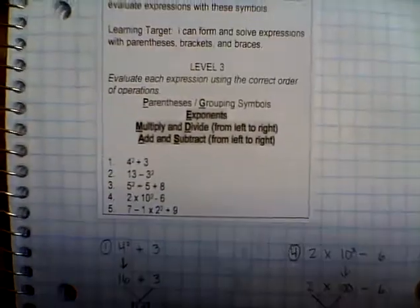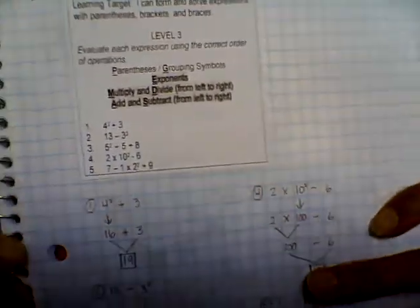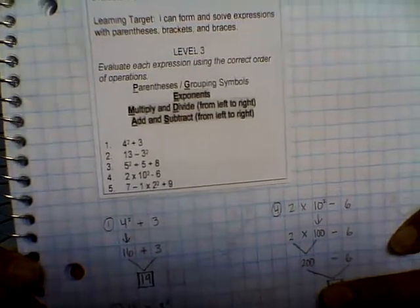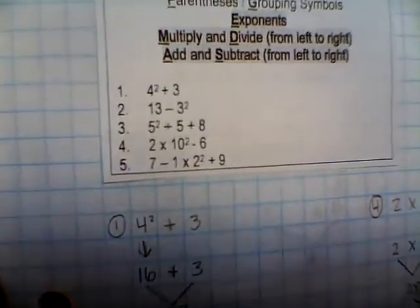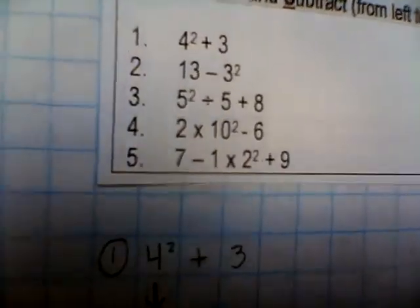Let's review our correct order of operations: parentheses and grouping symbols, exponents, multiply and divide from left to right, add and subtract from left to right.